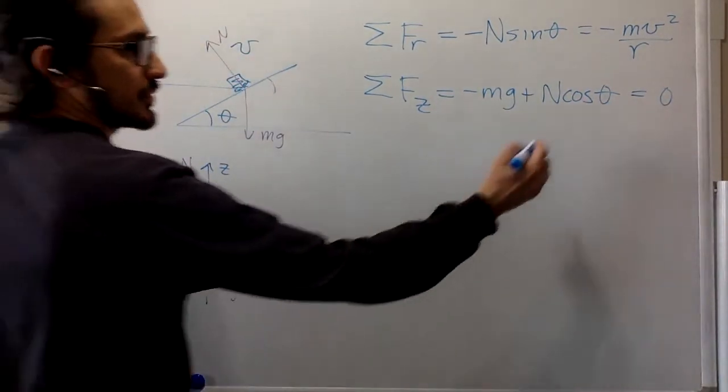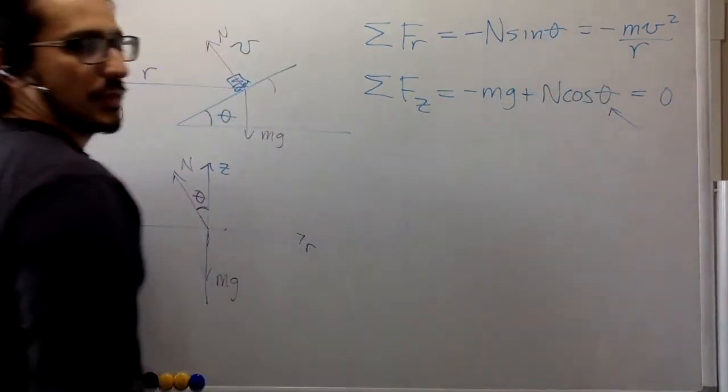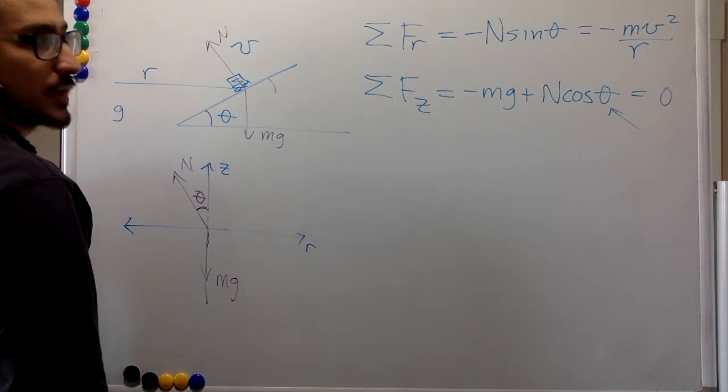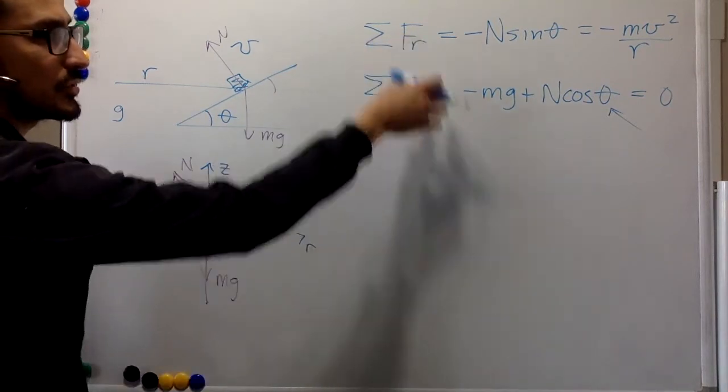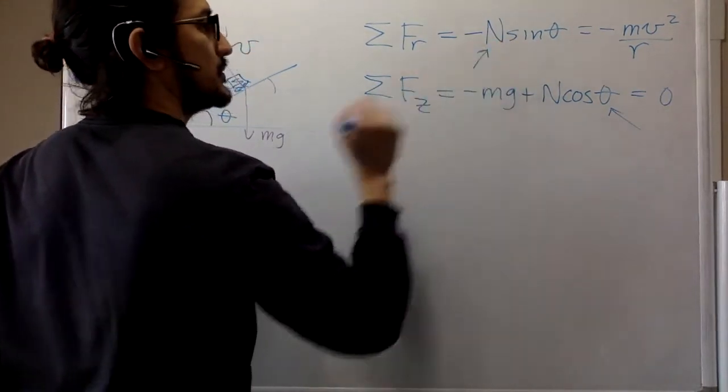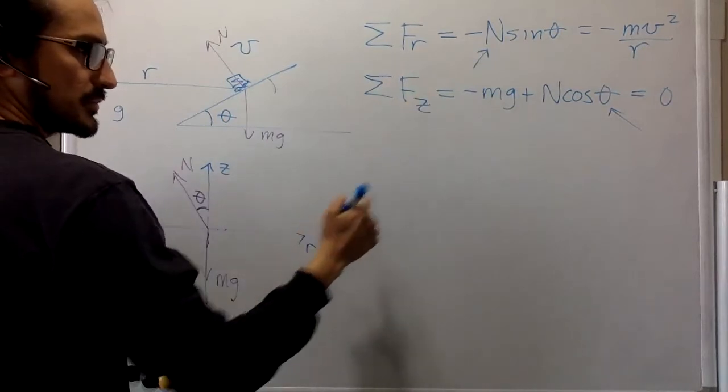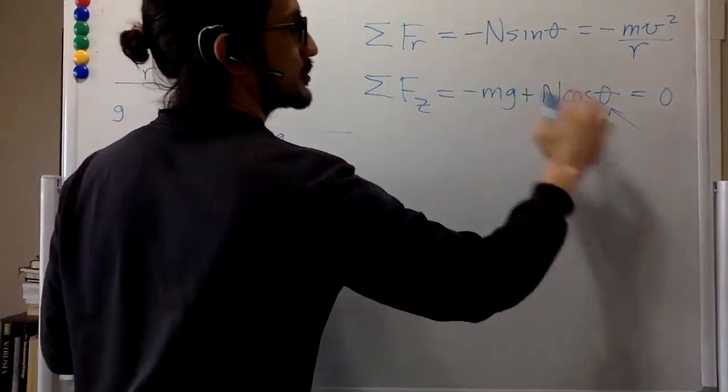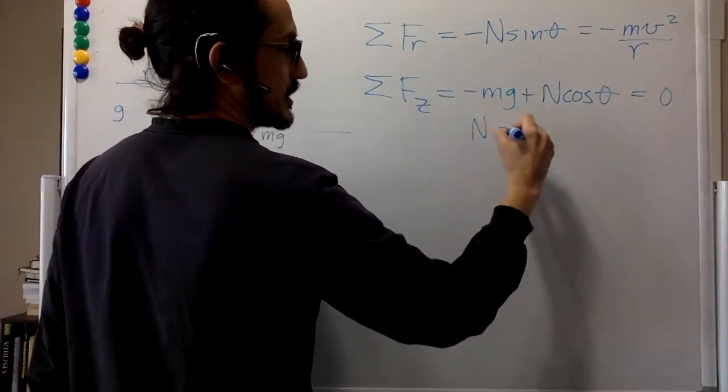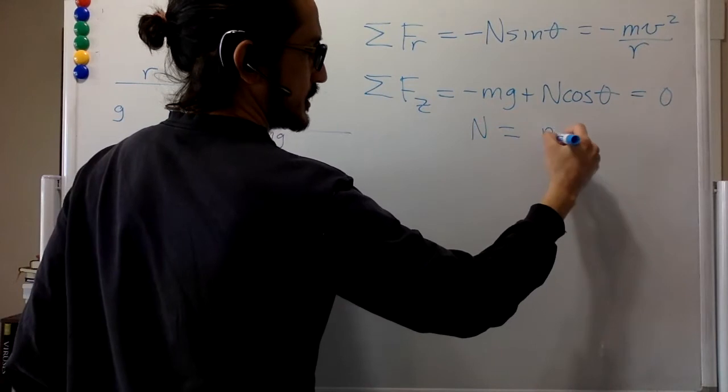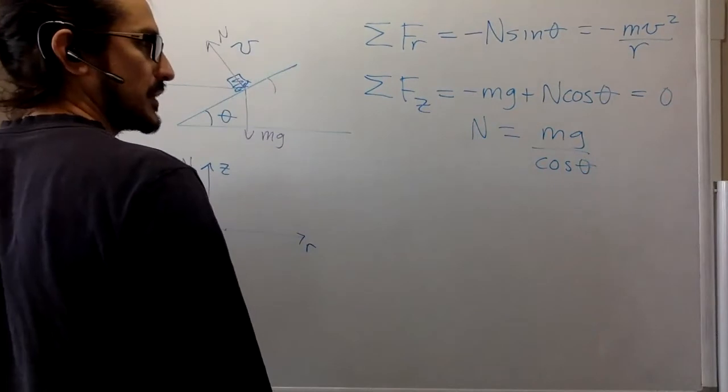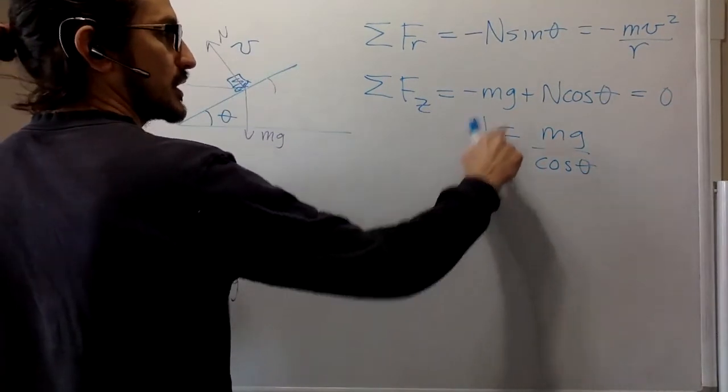So we're looking for the angle theta, and we have two equations, so we can find it because the other variable is N. But we can get rid of it with this other equation. So from this one, N is mg over cosine theta, and we can put it up here.